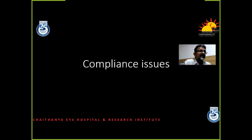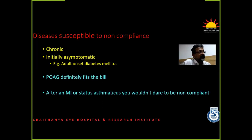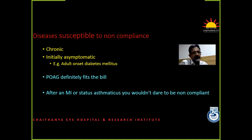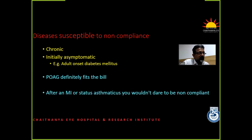Compliance is one issue that we need to address for chronic diseases. Diseases that are susceptible to non-compliance are typically chronic ones that are initially asymptomatic — the typical one we think about is diabetes mellitus. POAG definitely is in this group because the progression is over years and decades, and the patient doesn't find a problem until he can't read, which is the last bit of vision he's got. If the patient had a myocardial infarction, something putting him in discomfort, he would definitely be compliant — but not with primary open-angle glaucoma.